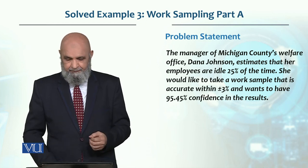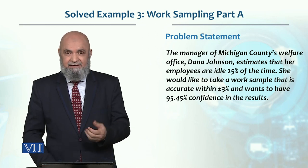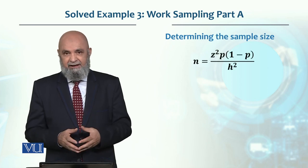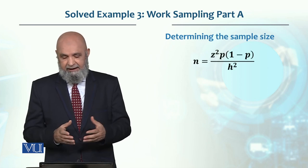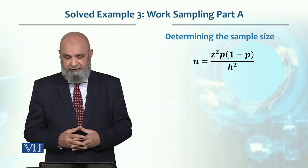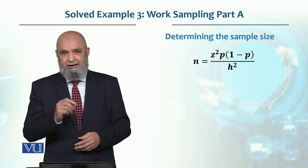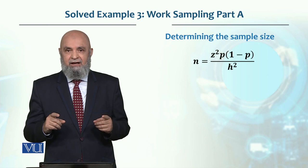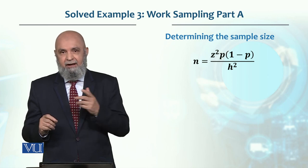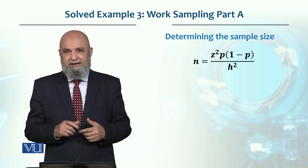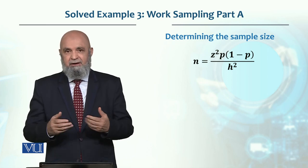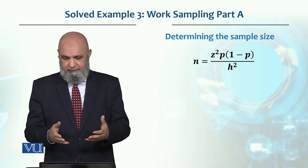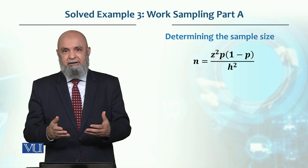To find the sample size, we have this equation. In this equation, n is the sample size — how many observations should there be — and it is equal to Z squared. As mentioned, Z value is related to the confidence level, and these values are given in charts. From those charts, you can look up the Z value against the confidence level. From the chart shown earlier, that value was equal to 2 for Z.